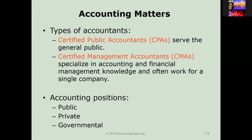Certified public accountants, or CPAs, are licensed professional accountants who serve the general public. CPAs work for public accounting firms, businesses, government entities, or even educational institutions. In order to become a CPA, you must meet educational and experience requirements, and then you have to pass the CPA exam. You can find more information about the CPA exam or the requirements by going to the AICPA website — the American Institute of Certified Public Accountants — where you will find more information regarding CPA requirements and the exams.